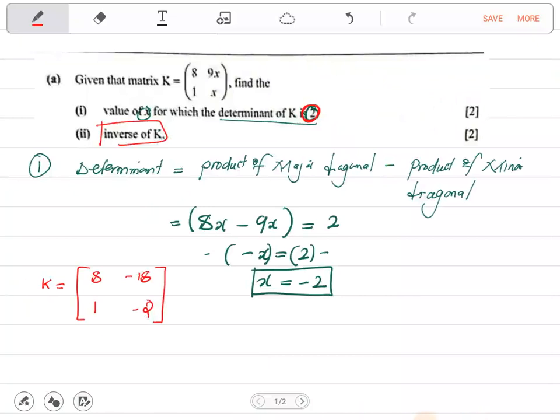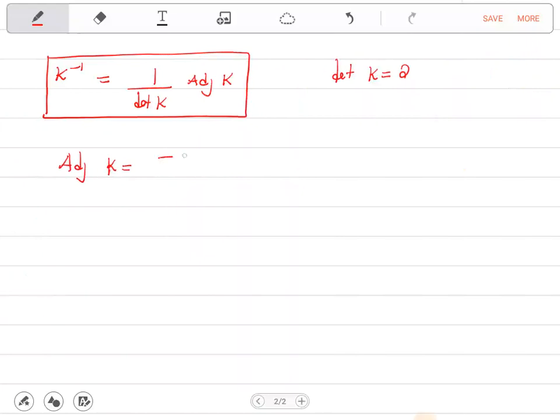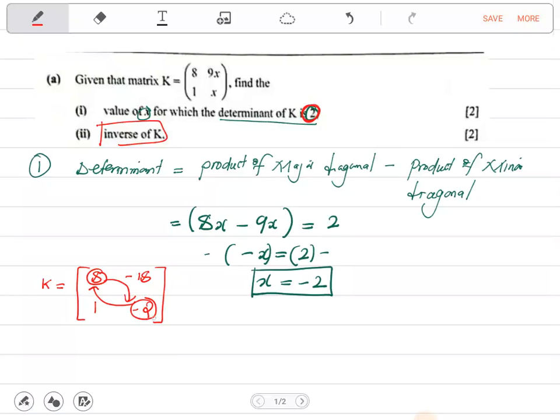Now the adjoint of K we are talking about, these two, they swap each other. While these two here in the minor, they change their signs. So I'm going to have negative 2 here. I'm going to have 8 there. This one becomes 18 and becomes negative 1. Like I said, these two they swap. Like they have done, they have swapped.